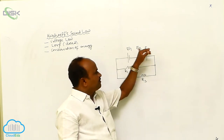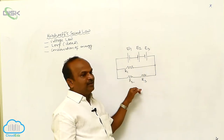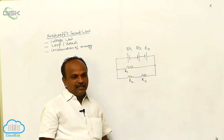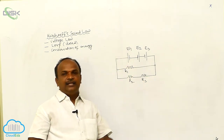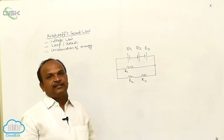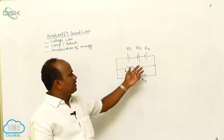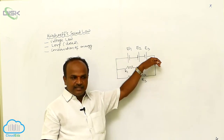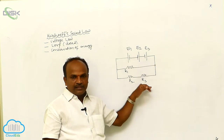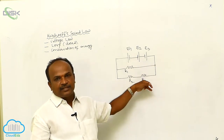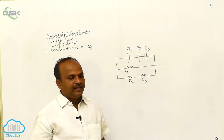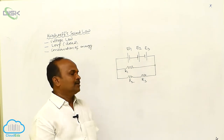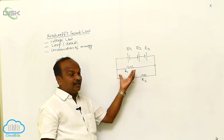These cells will supply the energy and the resistors will utilize the energy. Whatever energy is supplied by the cell, that energy is utilized by the resistors. In this circuit, E1, E2, E3 are the energy suppliers and R1, R2, R3 are the energy utilizers.